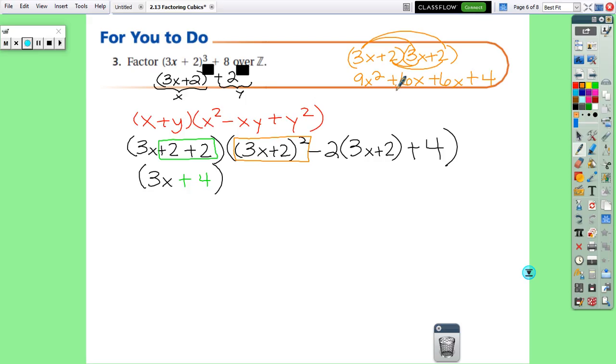So then with this, you combine your like terms. So you get 9x² + 12x + 4. So this is going to replace this orange box right here.